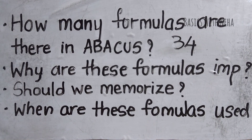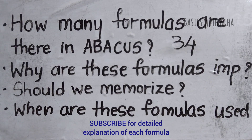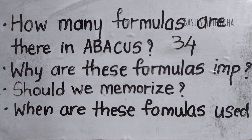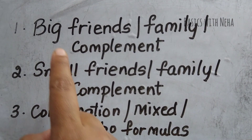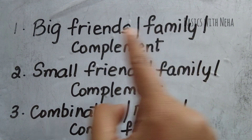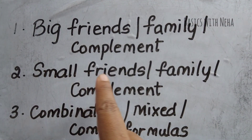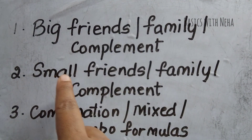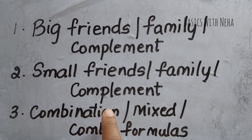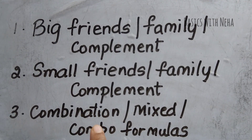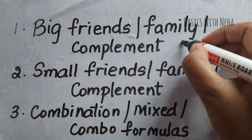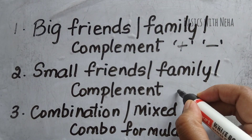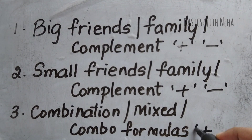When are these formulas used? These formulas are used specifically at certain points of time. We have three sets of formulas. The first set is big friends, also called big family or big complement. The second set is small friends, also called small family or small complement. The third set is combination formulas, also called mixed formulas or combo formulas. In all three sets, we have both positive and negative components.